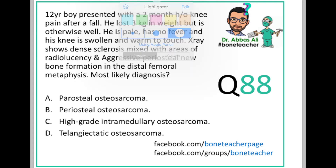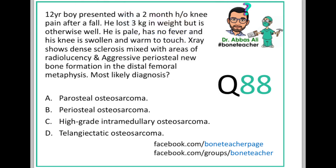Let's look at this question in more detail. The hints are: it's a 12-year-old boy with a two-month history of knee pain, usually an incidental finding after a fall. He lost 3 kgs in weight, otherwise well. He is pale with no fever, there is swelling and it is warm to touch. X-ray shows dense sclerosis mixed with areas of radiolucency, and aggressive periosteal reaction or periosteal new bone formation in the distal femoral metaphysis.